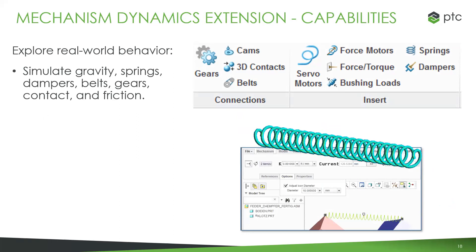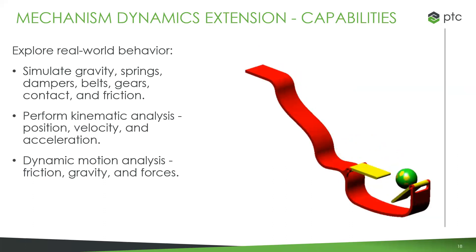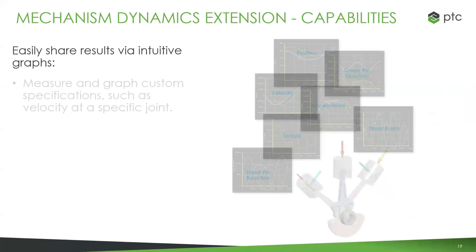The extension takes into account real-world behavior and builds it into the design — things like springs, where you define a pitch, the strength, the size. The system fully understands how that works and understands things like stored force, release force, and bounce back. What we're doing now is true kinematic analysis, taking into account position, velocity, and acceleration within the context of the parts. Even with a simple assembly you have springs, dampers, contacts, friction — things happening in the real world. What kind of forces are you going to get? We can take all of that into account right from within Creo.